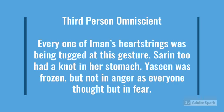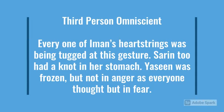See how the narrator is revealing the inner emotions of more than one character. Iman's heartstrings are said to be tugged. Then Sarin is said to have a knot in her stomach. Then Yasin's state of being frozen is established to be not out of anger but in fear. The omniscient third-person narrator is authoritative and whatever he or she says is factual.